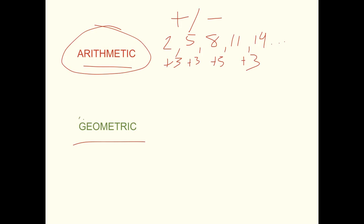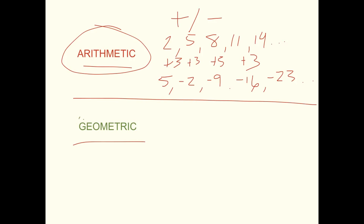Arithmetic is a sequence. So you can add three each time or you subtract. You could start at like 5 and then you can subtract 7 each time. So 5 minus 7 is negative 2, minus 7 is negative 9, minus 7 is negative 16, minus 7 is negative 23, and so forth. So you're subtracting each time — it's not increasing exponentially, it's increasing or decreasing the same amount each time. That's an arithmetic sequence.